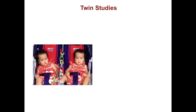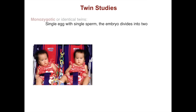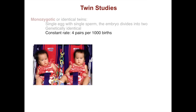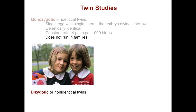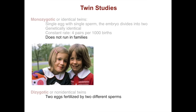Twin studies have been very useful in genetics. Monozygotic, or identical twins, share a single egg with single sperm, and the embryo then divides into two, giving two genetically identical people. There is a constant rate of this — about four pairs per thousand births — and it does not run in families. Dizygotic, or non-identical twins, are the product of two eggs fertilized by two different sperm. They share half their genes, just like any other pair of siblings. Having non-identical twins does tend to run in families and may have a genetic basis.